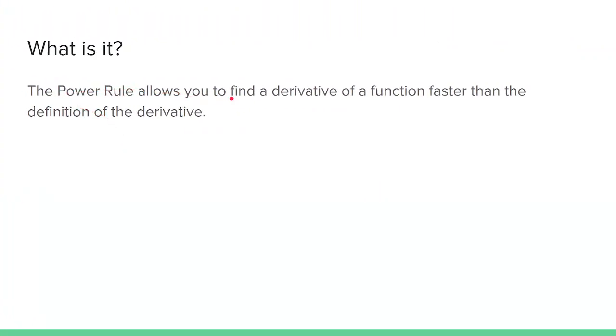So what is it? The power rule allows you to find a derivative of a function faster than the definition of the derivative. The derivative of x to the n equals n times x to the n minus 1.